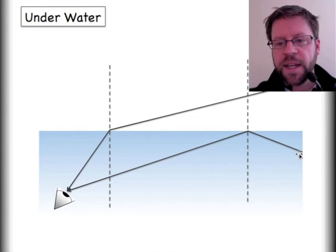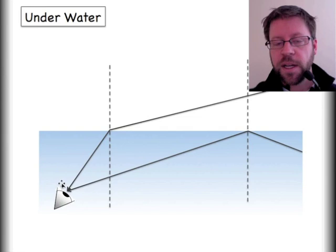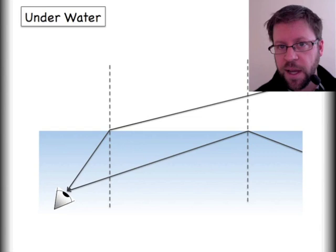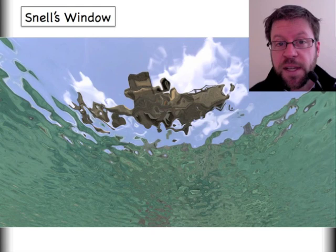Light is coming up from there and it's going to totally internally reflect and it's going to go into your eyeball. And so sometimes when you are underwater you see the outside world, sometimes you're going to see what's actually below you.